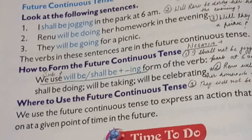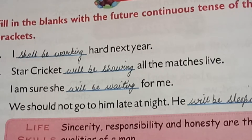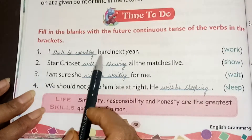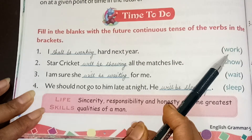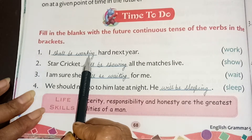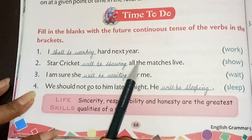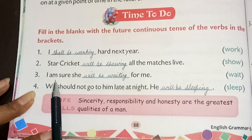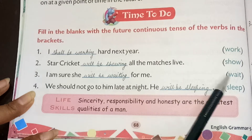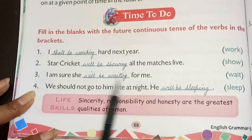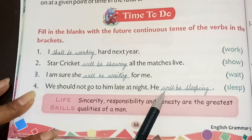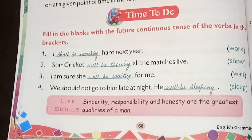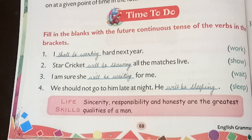And to make it more clear, we have some practice. You can write down the examples also. I dash hard next year — work ka kya karenge? I shall be working. Star kick cricket dash all the matches live — show ka kya karenge? Will be showing. I am sure she dash for me — wait ka will be waiting for me. We should not go to him late at night — he will be sleeping. Sleep ka sleeping. This is how we have to do the fill-ups regarding future continuous tense.